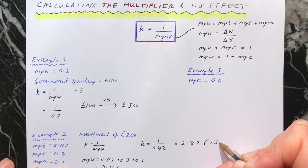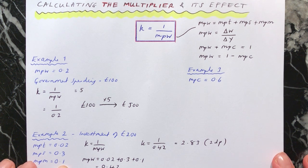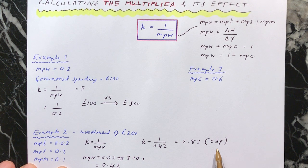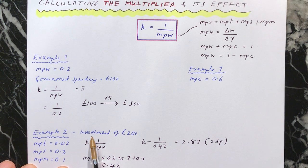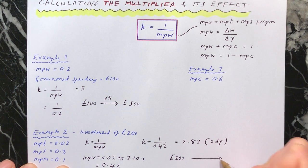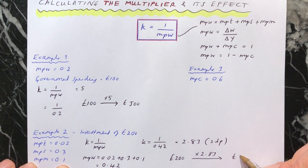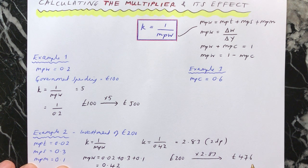Remember, in economics we generally work things out to two decimal places. We can then use this to find the final effect on the economy of an investment of £200. We know £200 went into the economy, and the final impact on national income is £200 multiplied by the multiplier, 2.83, giving us £476. So that's the final impact on national income.